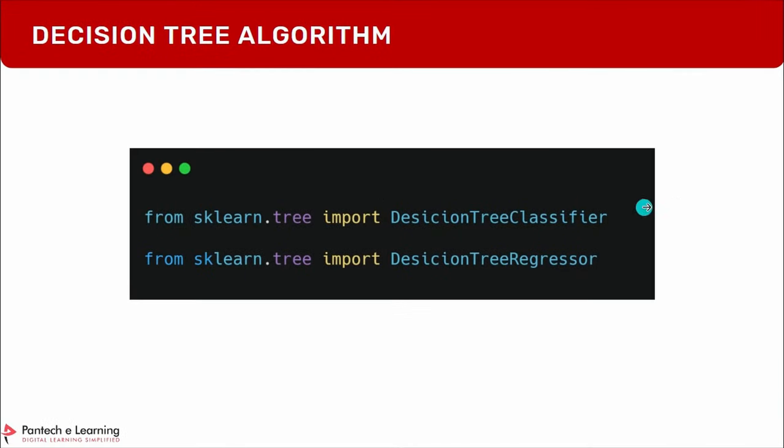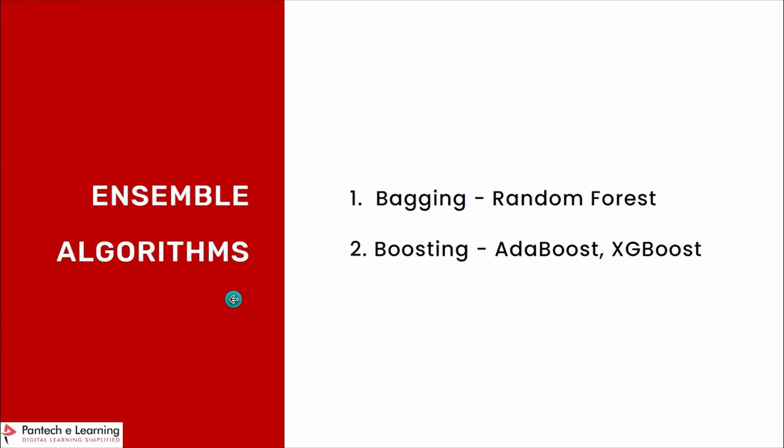Continuing with the next session, we'll cover ensemble algorithms: random forest, AdaBoost, XGBoost, and Naive Bayes, K-Nearest Neighbor, and clustering. In this session, we've seen two important algorithms elaborately: support vector machines and decision trees. Combined with the previous session's linear regression, Lasso, Ridge, logistic regression, support vector classifier/regressor, and decision tree classifier/regressor, we'll see the remaining algorithms in the next session. Thank you.